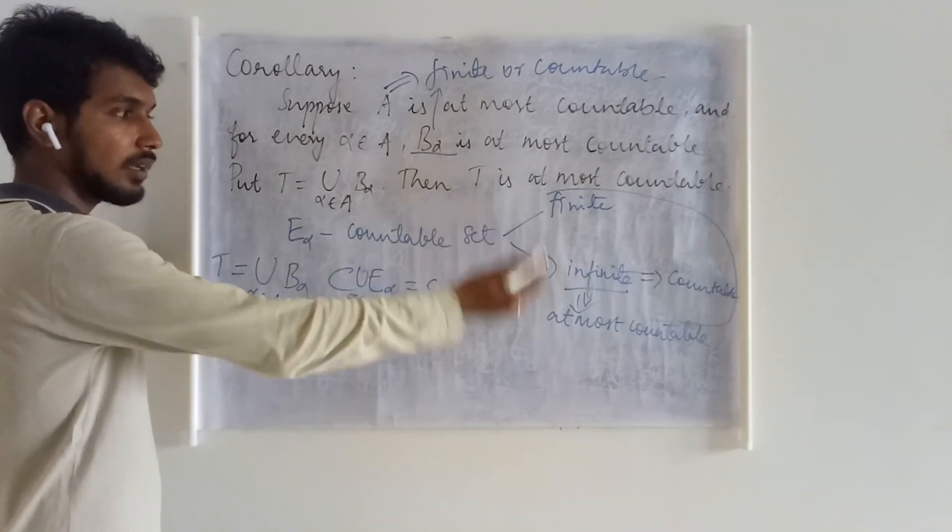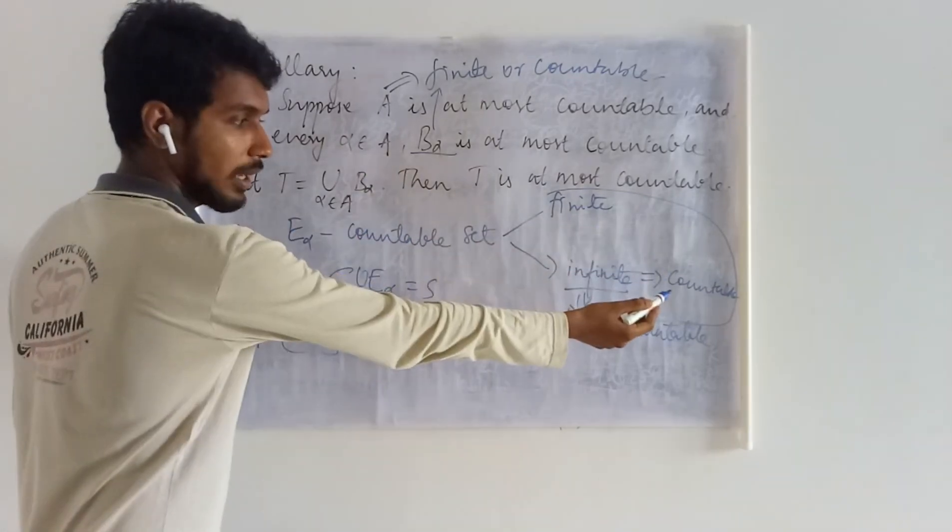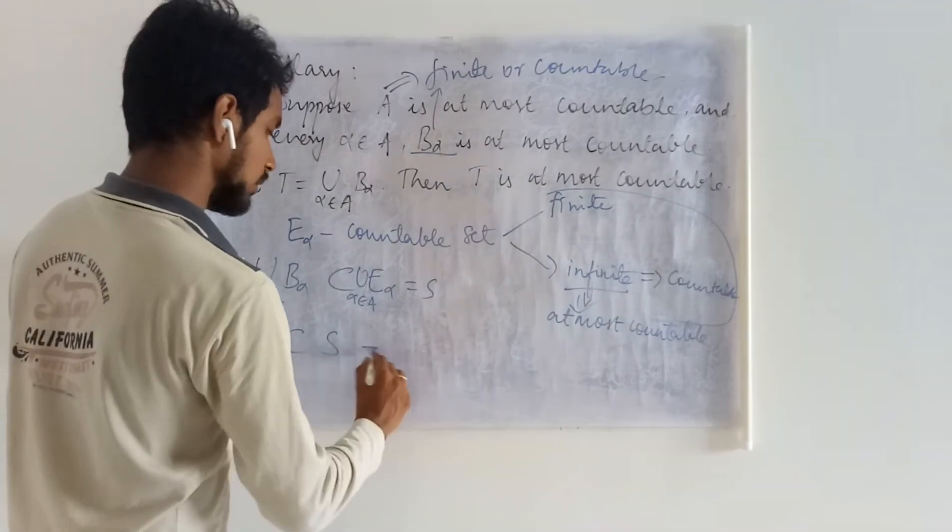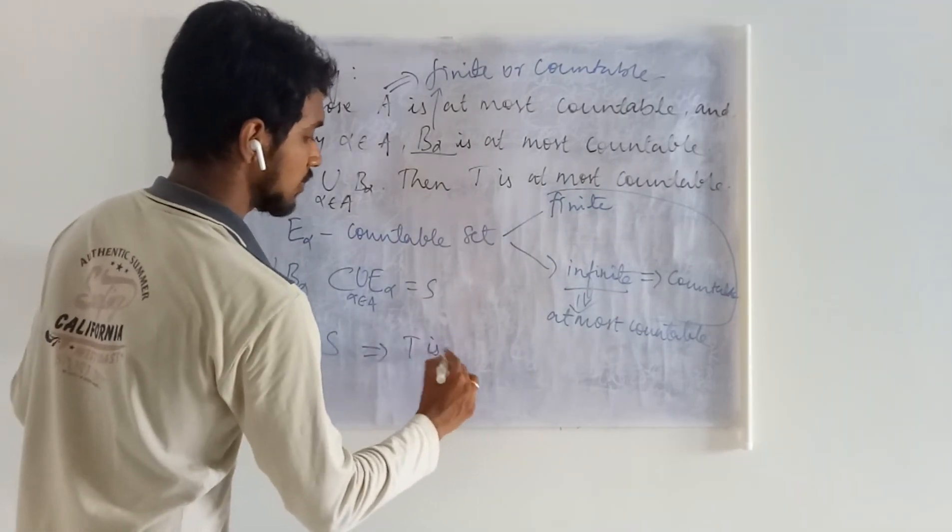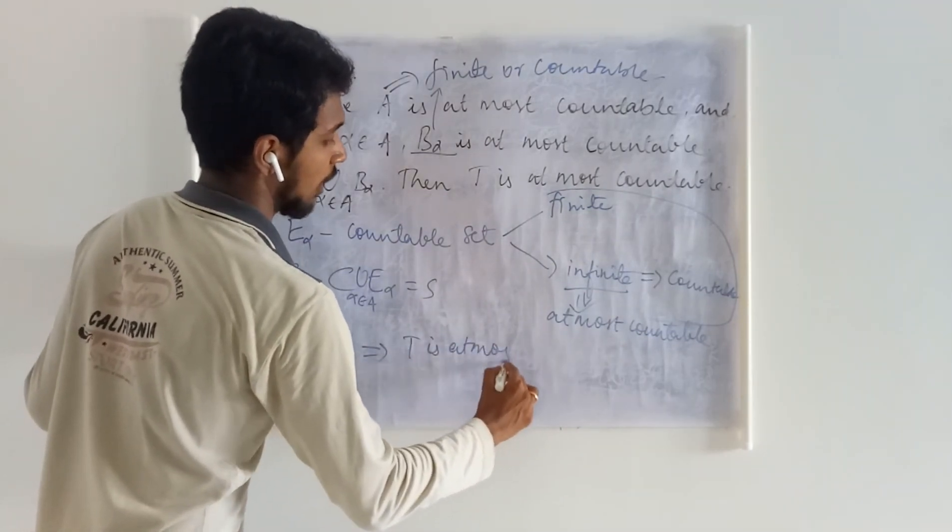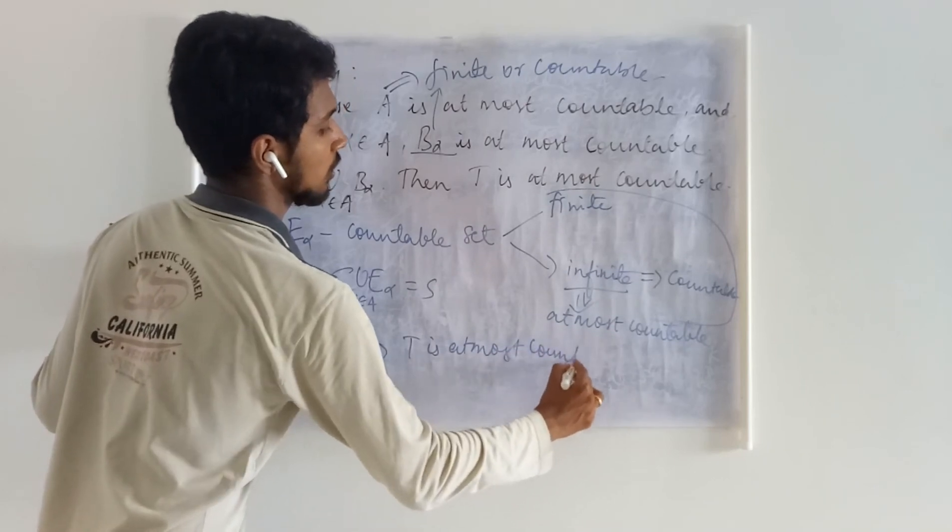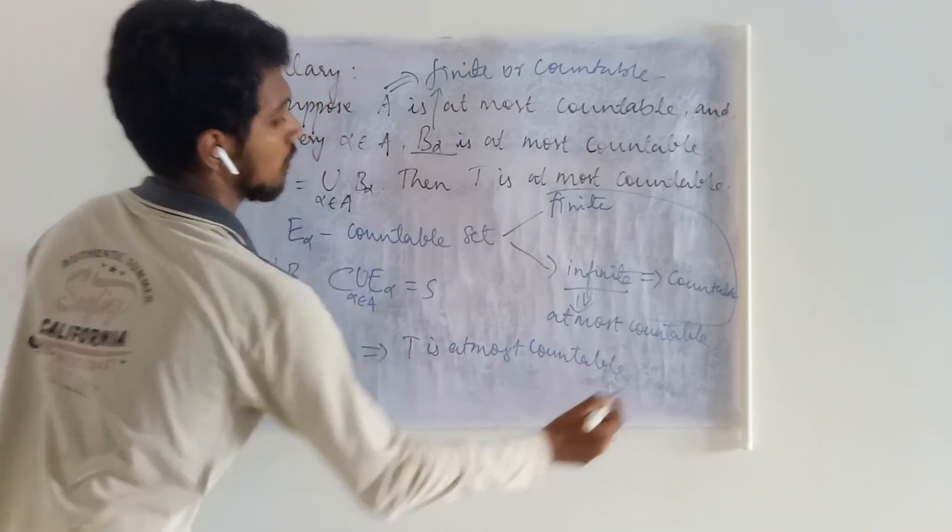It will be either finite or infinite—infinite in the sense it will be countable. Therefore, this concludes that T is at most countable.